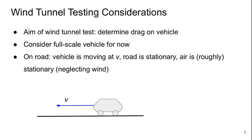If we're driving this vehicle on the road, the vehicle is moving forward at some velocity V. Let's say the road is stationary and the air is also roughly stationary. We'll say that there's no wind.